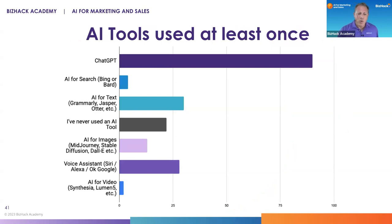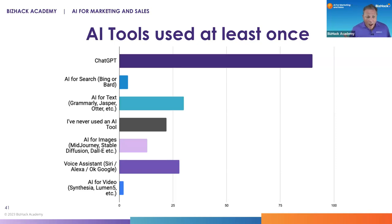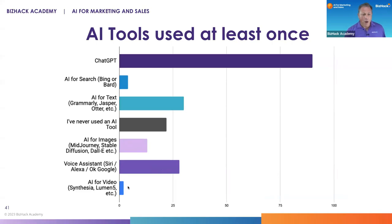Which AI tools have you used? The most popular is obviously ChatGPT. Next is AI for text, which is the focus of today — things like Grammarly, Jasper, etc. AI for images is much less common. Voice assistants are also used. And AI for video, which is the subject of session five, most of you haven't really touched yet.